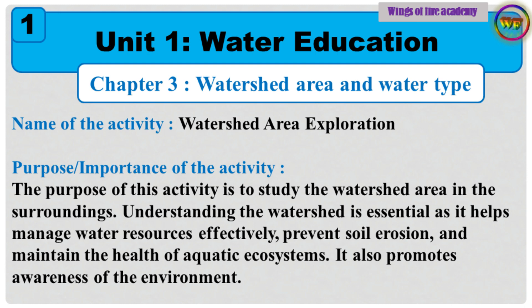Name of the activity: Watershed Area Exploration. Purpose and importance of the activity: The purpose of this activity is to study the watershed area in the surroundings. Understanding the watershed is essential as it helps manage water resources effectively, prevent soil erosion, and maintain the health of aquatic ecosystems. It also promotes awareness of the environment.